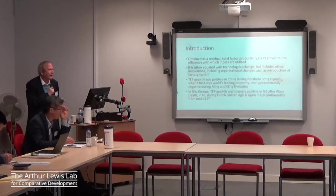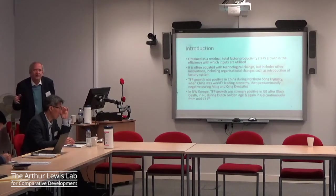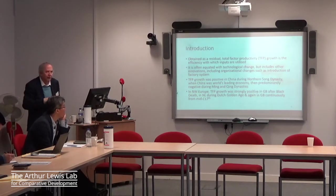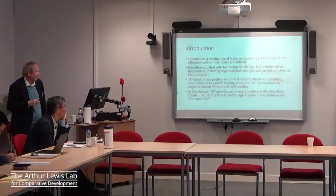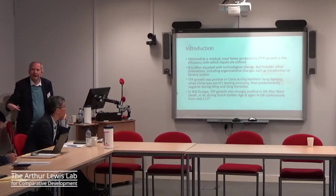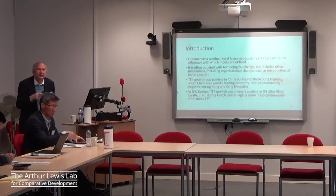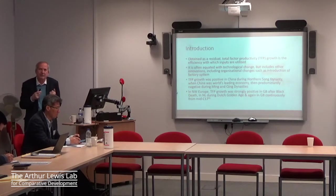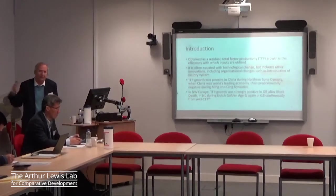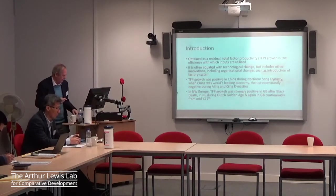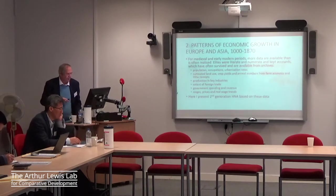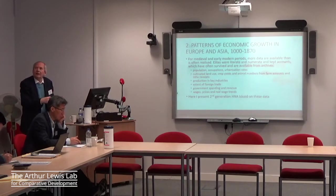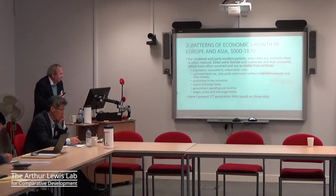After the Black Death, we see positive TFP growth in Britain. I suspect it's also positive in the Netherlands, but we don't have data for that. We do have data for the Dutch Golden Age in the 16th and 17th centuries — it's positive. In Britain it's pretty continuous from the mid-17th century, and it accounts for most of the growth of GDP per capita during the transition to modern economic growth at the time of the Industrial Revolution. So the first part is establishing what we're trying to explain: when does the Great Divergence begin?